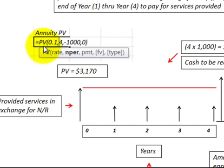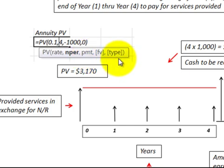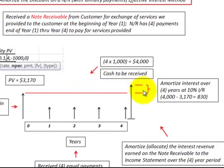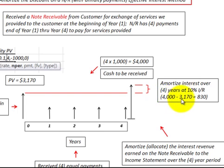You can use a calculator or the present value formula in Excel. I'm using an interest rate of ten percent, which is what's imputed in the note receivable, with four periods and a payment of a thousand dollars per year. It's an ordinary annuity — payments at the end of the year — so you enter zero for that setting. The interest to amortize is four thousand dollars less the present value of those annuity payments.